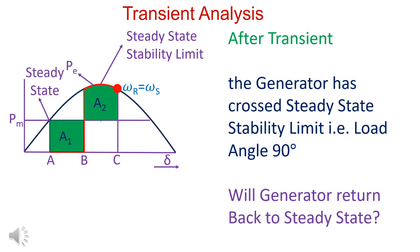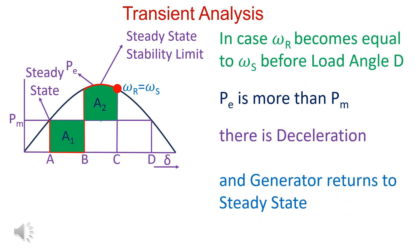In the case considered, load angle has crossed steady state stability limit, that is load angle 90 degrees. Question is whether generator returns back to steady state or not. In case Omega R becomes equal to Omega S before load angle reaches D, PE is more than PM. There is deceleration and generator returns to steady state.